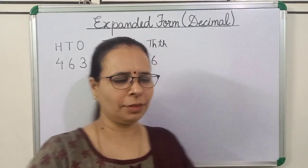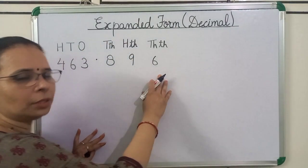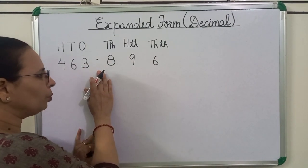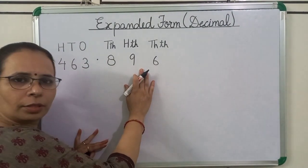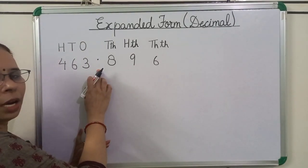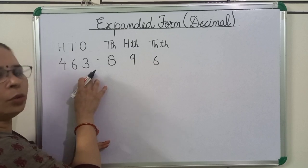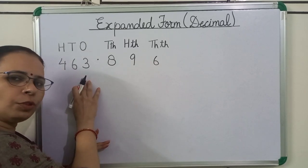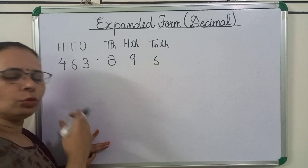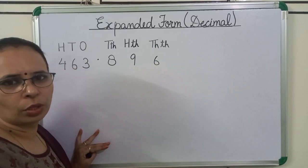Take an example. In this number, the digits which are to the right of the decimal point are the decimal part. The digits which are to the left of the decimal point are whole numbers. First, we will expand the whole numbers. You already know how to expand whole numbers.